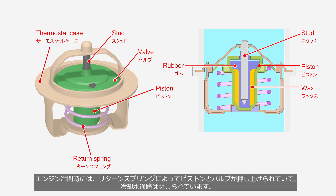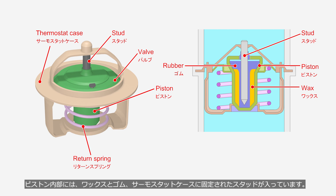When the engine is cool, the piston and valve are pushed up by the return spring, and the coolant passage is closed. Inside the piston, there is wax, rubber, and a stud that is fixed to the thermostat case.